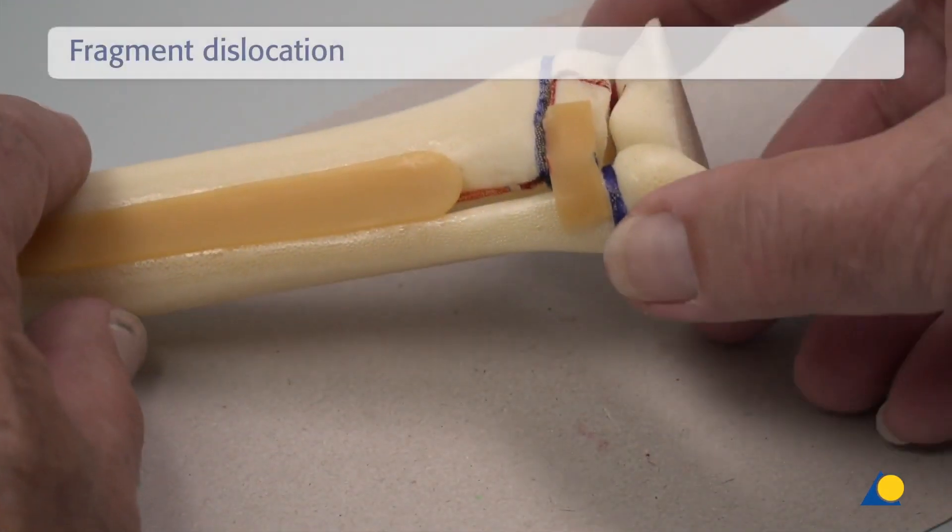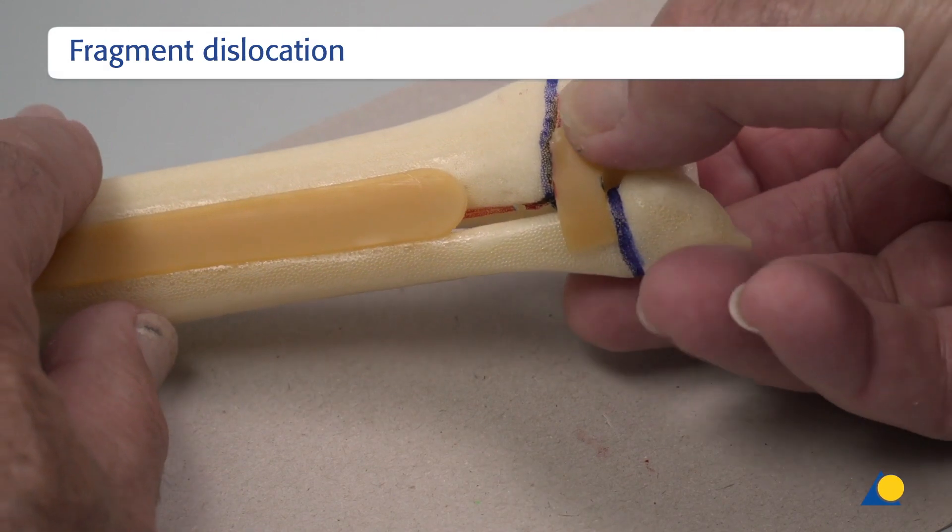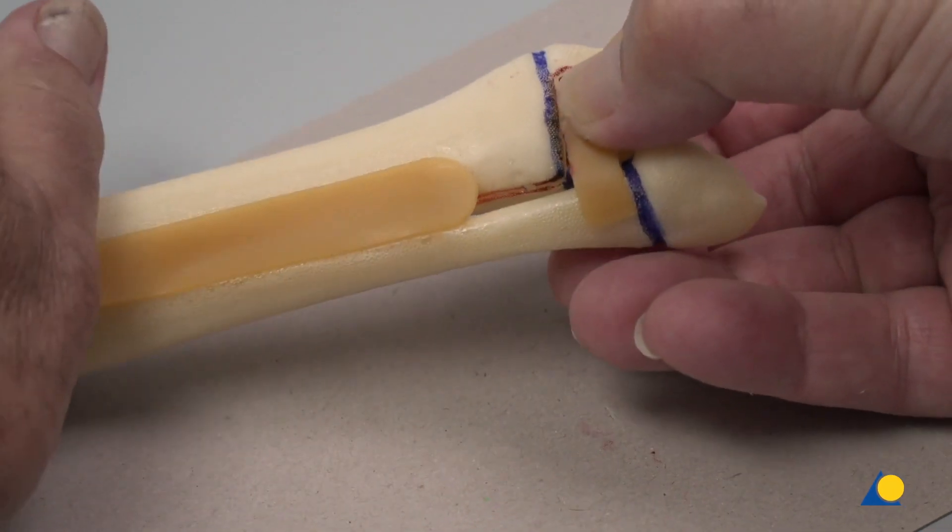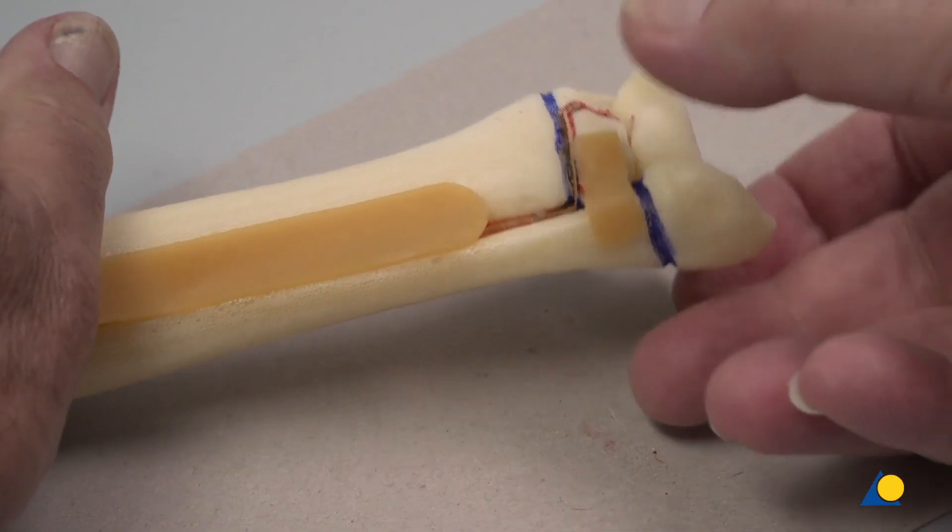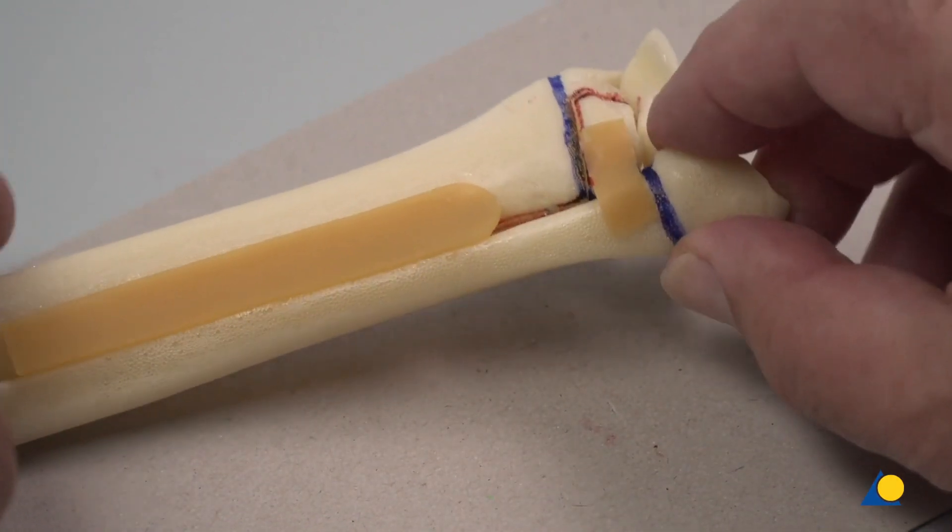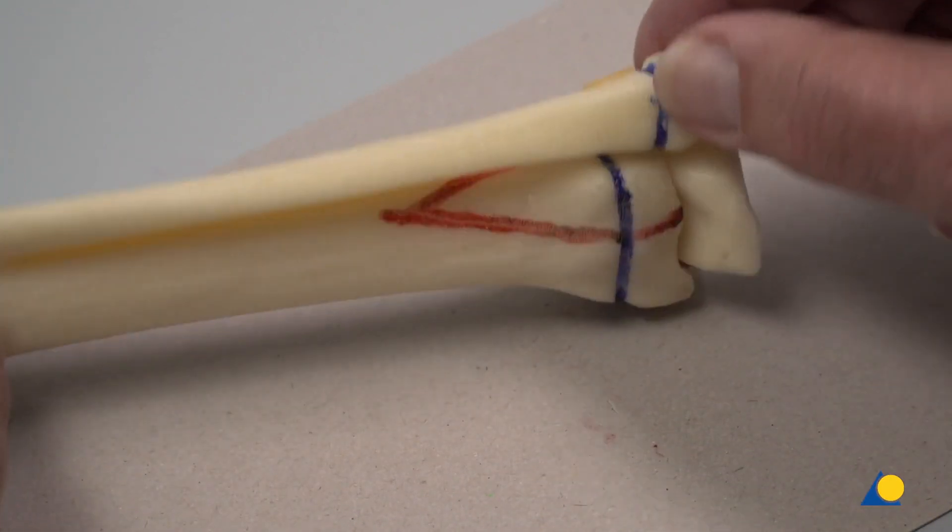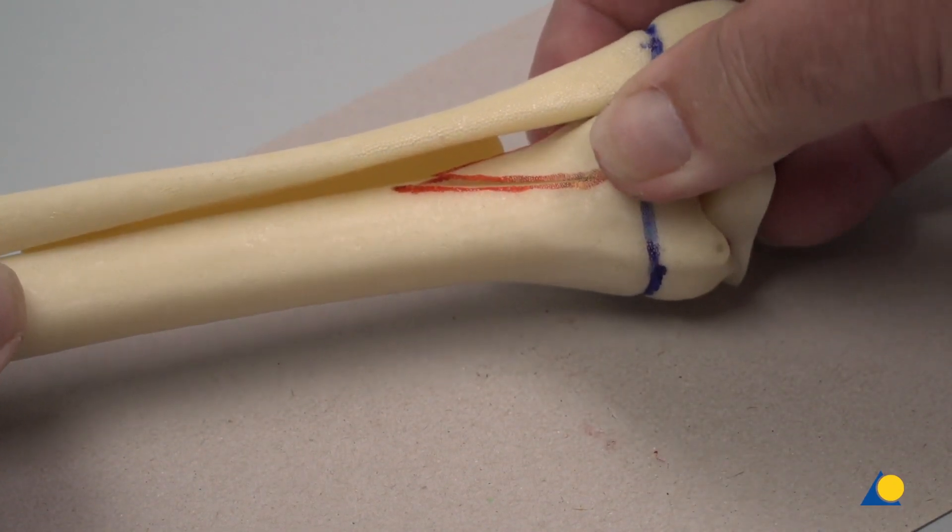The triplane fracture is a typical external rotation injury. Once the cutting procedure has been completed, the fragment is rotated externally and with an audible click, it will displace, producing the triplane fracture.